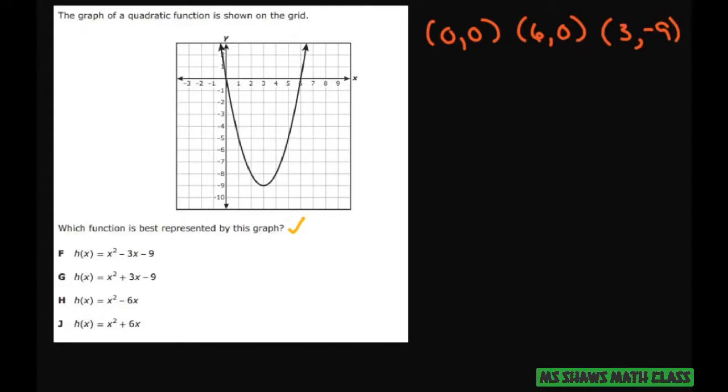So I picked out the three points. These are our two zeroes or our roots here. And my minimum here is 3 comma negative 9, or that's your point there. And what you want to use is this equation here.